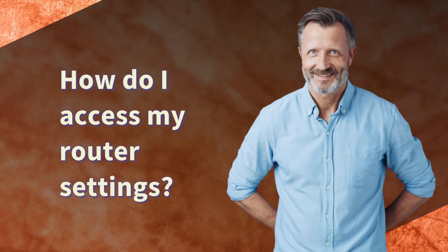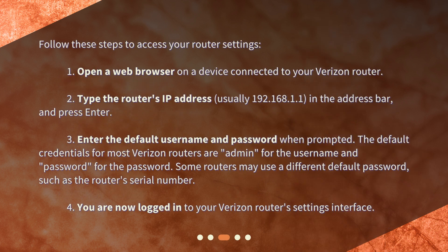How do I access my router settings? Follow these steps: 1. Open a web browser on a device connected to your Verizon router. 2. Type the router's IP address, usually 192.168.1.1, in the address bar and press Enter. 3. Enter the default username and password when prompted. The default credentials for most Verizon routers are 'admin' for the username and 'password' for the password. Some routers may use a different default password, such as the router's serial number. 4. You are now logged in to your Verizon router settings interface.